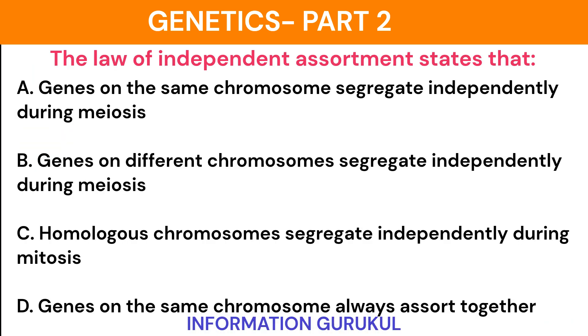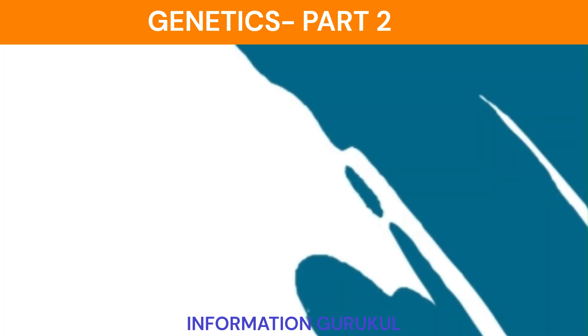The law of independent assortment states that genes on different chromosomes segregate independently during meiosis.